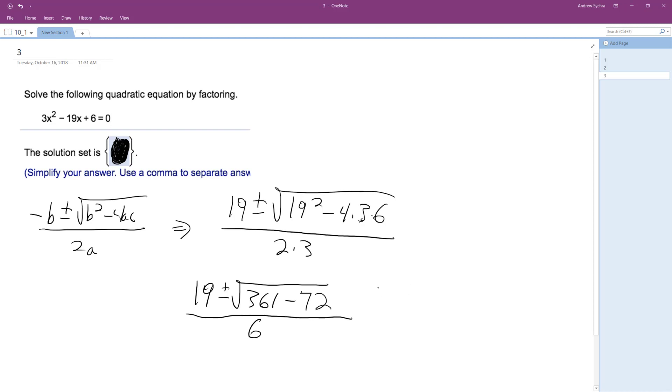So this ends up being 19 plus or minus square root of 289. Yeah. So square root of 289 is 17, all over 6.